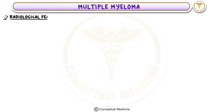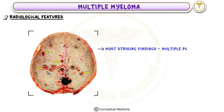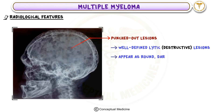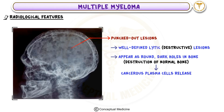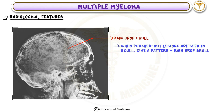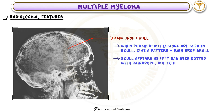Multiple Myeloma — Radiological Features. One of the most striking findings in multiple myeloma is the presence of multiple punched-out lesions in the bones. These are well-defined, lytic, destructive lesions seen on X-ray, appearing as round dark holes where normal bone has been destroyed. The reason is that cancerous plasma cells release osteoclast-activating factors, which break down bone tissue. When these punched-out lesions appear in the skull, they give a characteristic pattern known as the raindrop skull — as if the skull has been dotted with raindrops due to multiple areas of bone loss. This finding strongly suggests multiple myeloma.